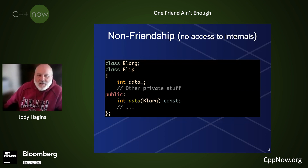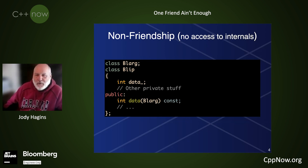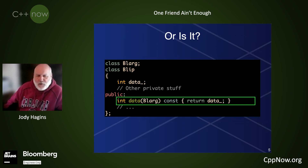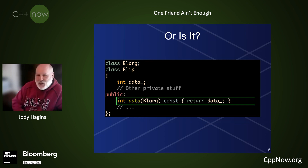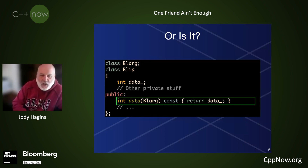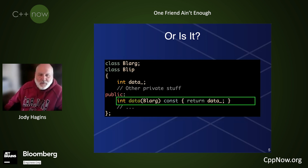Here, there are no friend declarations, so there's no friendship at all and no access to the internals of Blip. Or is that really true? The data member function has access to all of its internals, and furthermore, it can touch or return anything that it wants. And any piece of code with a Blarg can call this function and gain access to the stuff protected by this member function.